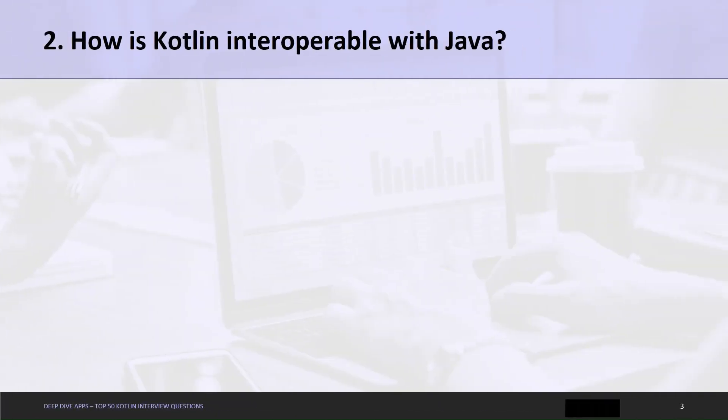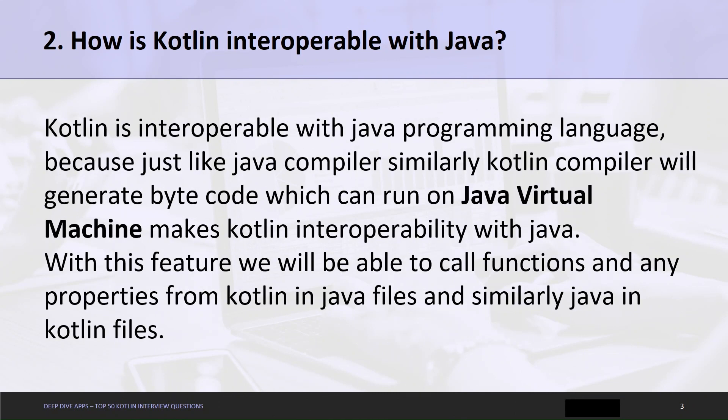Question 2: How is Kotlin interoperable with Java? Kotlin is interoperable with Java because just like the Java compiler, the Kotlin compiler will also generate bytecode which can run on the Java Virtual Machine. With this feature, we are able to call functions and properties from Kotlin in Java files, and similarly Java in Kotlin files.